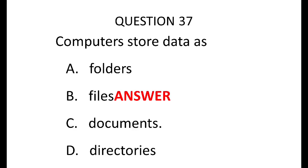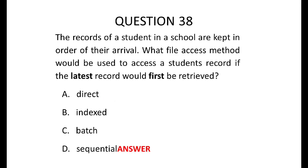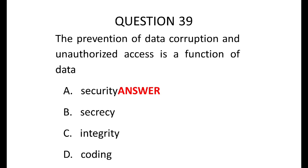Question 38: the records of a student in a school are kept in order of their arrival. What file access method will be used to access the student's record if the latest record is to be retrieved first? That is the sequential access method. Question 39: prevention of data corruption and unauthorized access is a function of data security. Secrecy and integrity are terms used in data security, but they do not capture everything — they only capture just a part. So the best answer is data security.